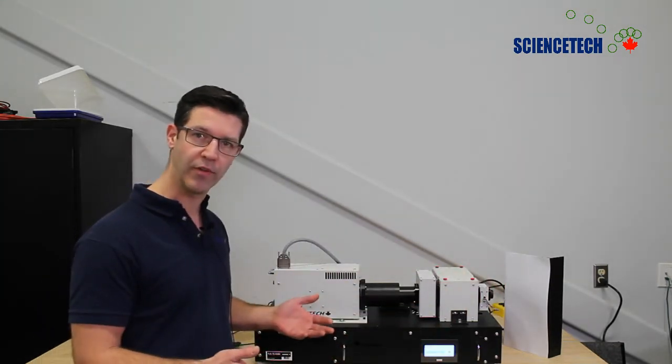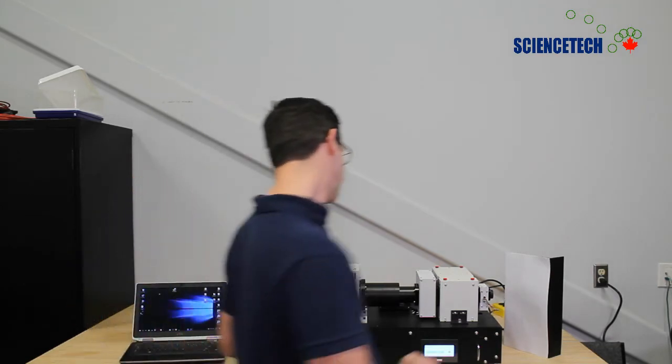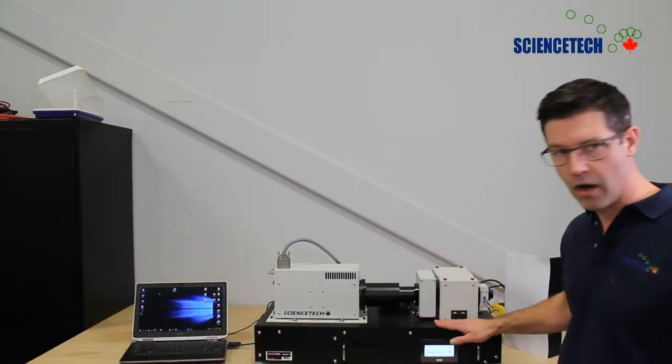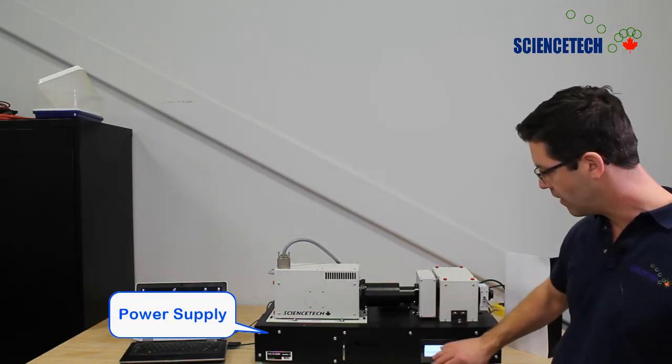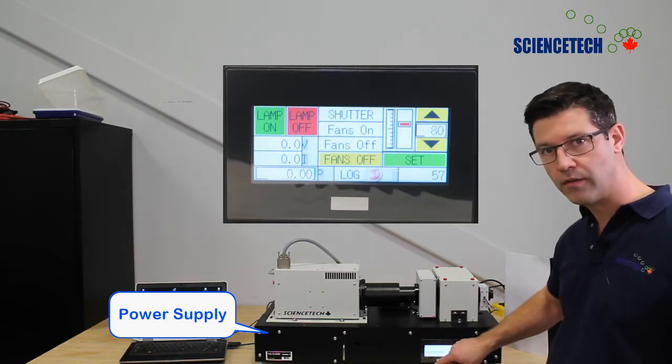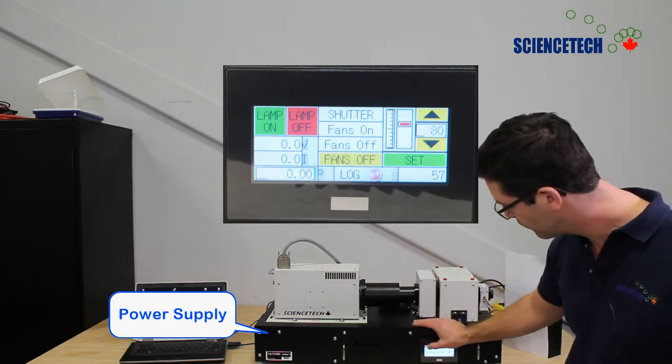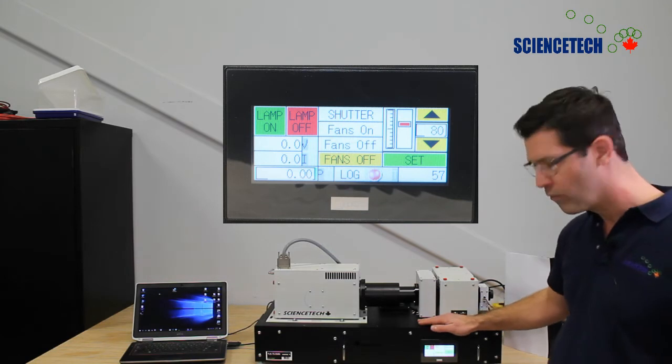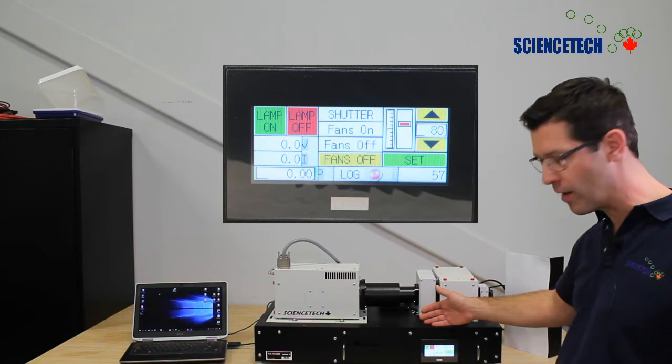I'm going to show you how to turn the system on and show you what it looks like. Our 601 series power supplies are integrated into the base of the system, and here we have a touchscreen that we can use to turn on the light source. I've just pressed OK at the splash screen after the power supply boots up.